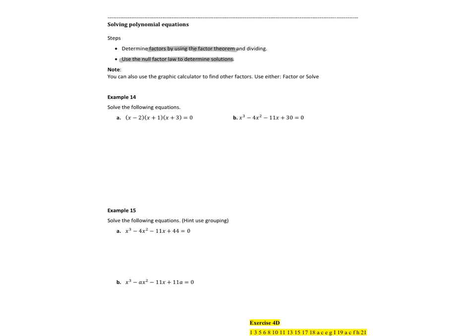So question 14A is set up for that. The only way this expression can equal zero is if one of these is equal to zero, which means x minus 2 is equal to zero, or x plus 1 is equal to zero, or x plus 3 is equal to zero, which means x has to equal positive 2, negative 1, or negative 3. That's how we get zero, and that's the advantage of factorizing.